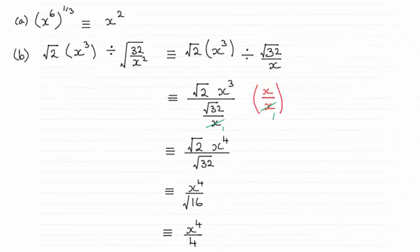Hi there. As you can see, the answer to part A is x squared, and the answer to part B is x to the 4 over 4, or a quarter x to the 4.